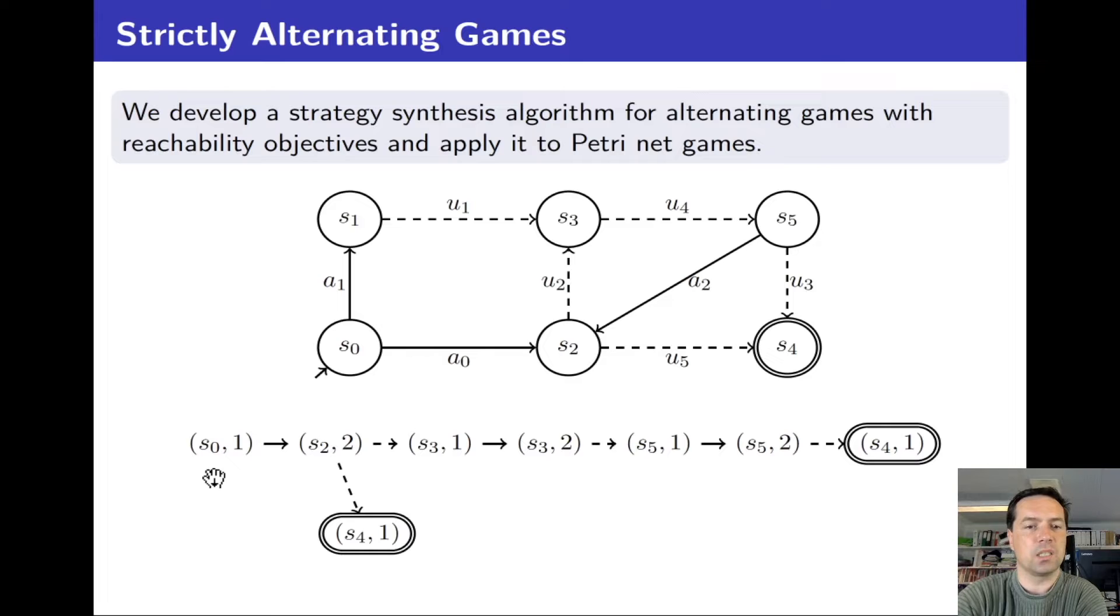So initially from s0, player 1 may decide to play the a0 transition and go to state s2. Now it's turn of player 2 who can decide to go to s4, that is a winning configuration for player 1, or it can decide to go to state s3 and give turn to player 1. In state s3, player 1 does not have any enabled transition so it can decide to simply idle and give turn to player 2. Player 2 is now forced to take the u4 transition which is the only one and end up in state s5.